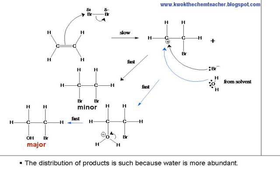The distribution of products is such because water is more abundant. This is the mechanism when Br2 dissolved in water and alkene are used.